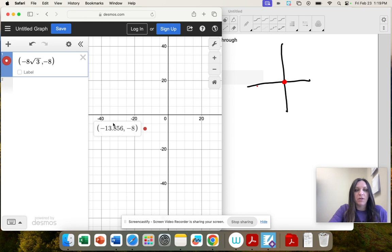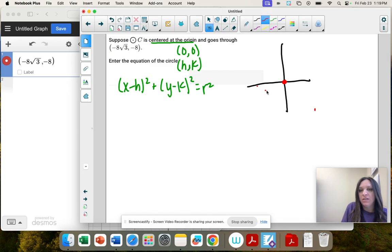So see how negative 8 square root of 3 is actually equivalent to negative 13.8. So we have a point out here at negative 8 square root of 3 and negative 8. And your circle goes through that, and then it goes around. So if we draw a line from the center out to that point, that's the length of the radius, and that's what we want to find. So this is where we're going to use the distance formula.